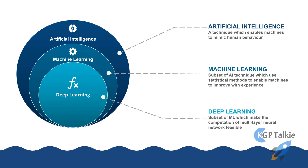Machine learning is a subset of artificial intelligence in which statistical methods are used to train the machine based on past experience. Any algorithm trained using machine learning can only predict outcomes from the subset of data on which it was trained. For example, if a machine is trained only on predicting fruits and vegetables, it will only recognize those. If you try to detect an animal or human, the machine learning algorithm will not be able to do that.